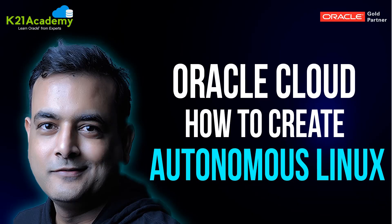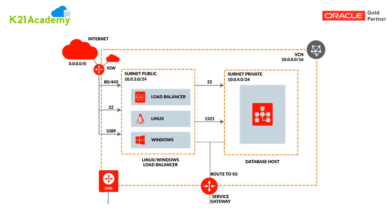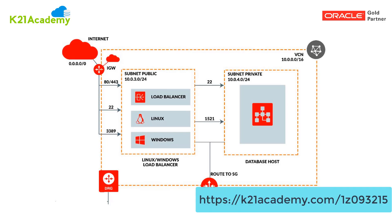Next, to access this autonomous Linux over the internet, we'll create a public subnet and assign a public IP, and configure an internet gateway on the VCN. If you're not familiar with VCN, public subnet, or internet gateway, I've covered it in a previous episode on networking at k2nacademy.com/109321 5.